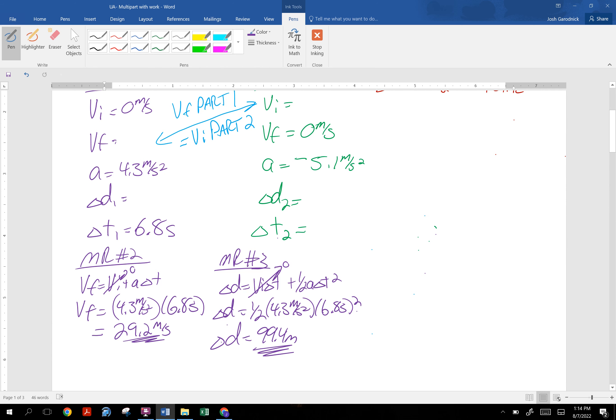Part two. We're asked for total distance, total time. And we now know that the initial velocity of part two is the final from part one. If I want to get time, I'm going to use math rep number two, which is final equals initial velocity plus acceleration times time. Final velocity is zero. How nice.